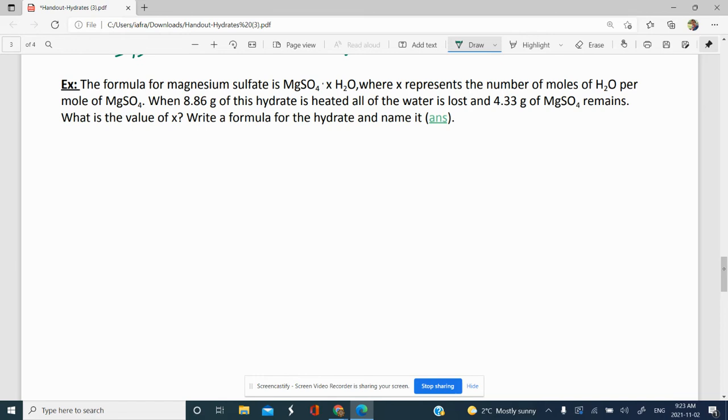This is the formula for magnesium sulfate something hydrate. We don't know what the hydrate is. We just know there's an X there. When 8.86 grams of the hydrate is heated, all the water is lost, and 4.33 grams of magnesium sulfate remains. What is the value of X? Write the formula for the hydrate and name it.